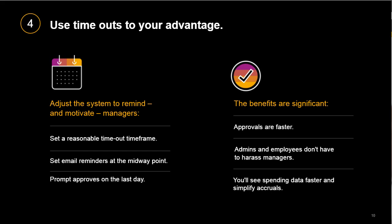Before getting to the emails, we recommend setting a timeout — if a manager hasn't approved a submitted expense report within a certain number of days, the system will automatically time out the report and send it to the approver's approver. Keep it to a reasonable time frame. The most common we see are 7, 10, or 14 days. Then set email reminders based on your timeout — cut the timeout in half and send a reminder at the midway point. If you have a 10-day timeout, send a 5-day reminder.